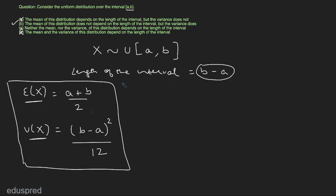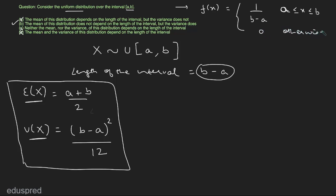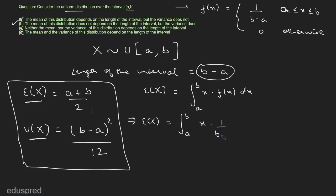Let's talk about the expected value of X. Before we can find it, we need the probability density function. For a uniform distribution over the interval a comma b, the PDF is 1 divided by b minus a for values of x between a and b, and 0 otherwise. Using this PDF, the expected value of X is the integral from a to b of x multiplied by f(x) dx, which gives us the integral from a to b of x times 1 divided by b minus a dx.